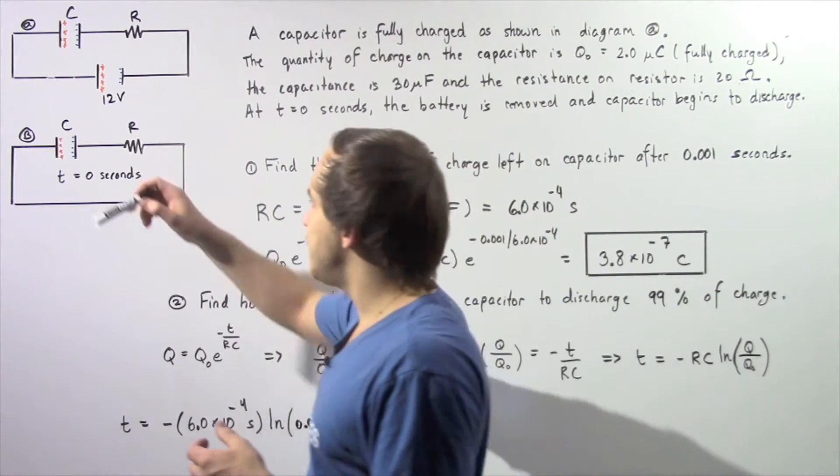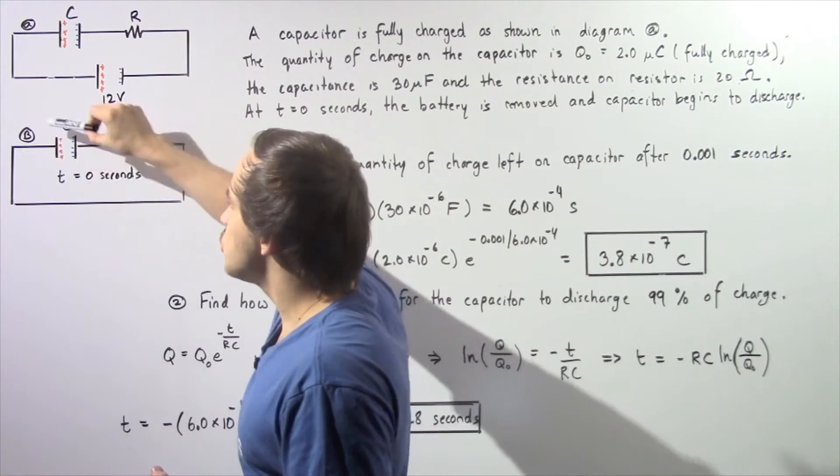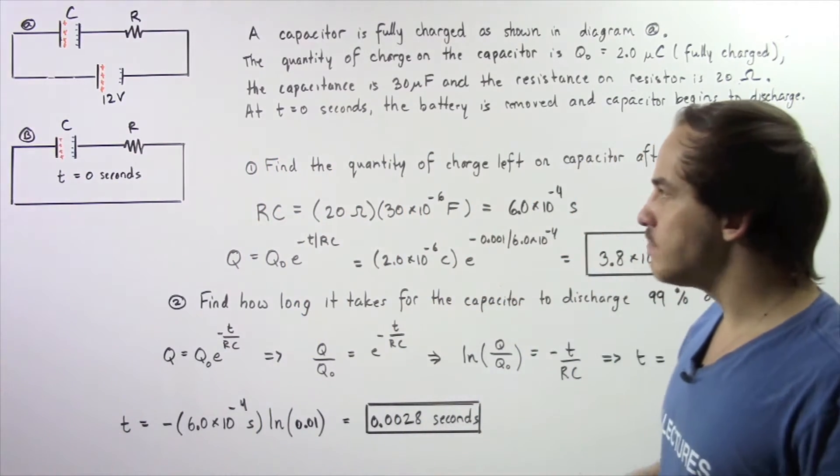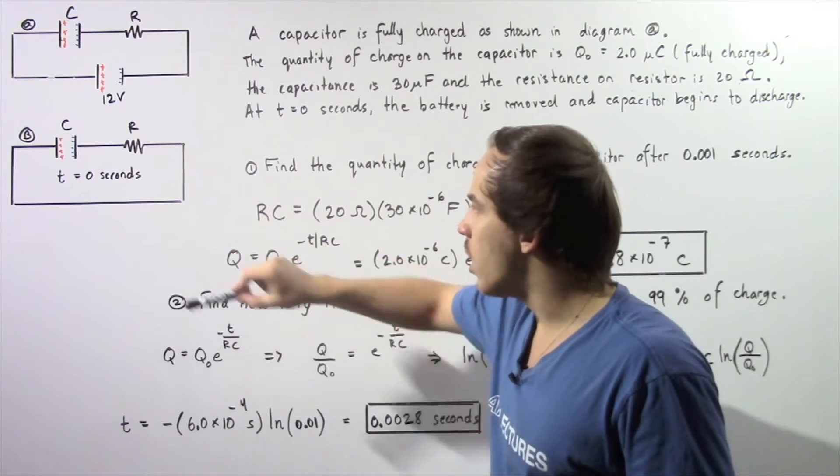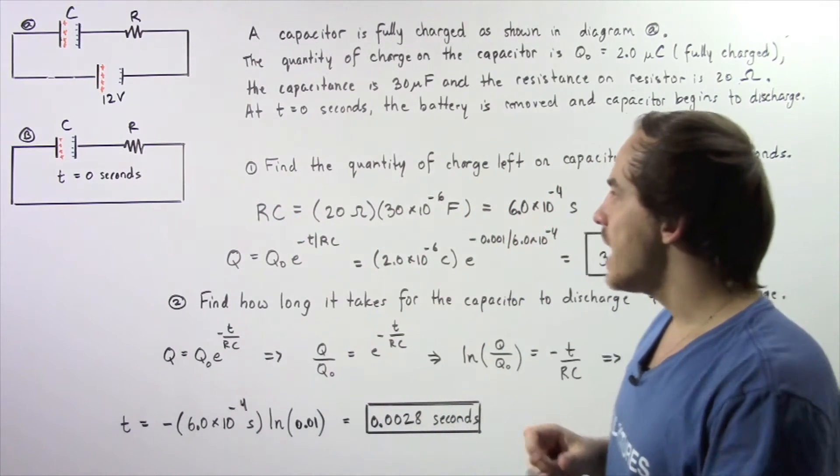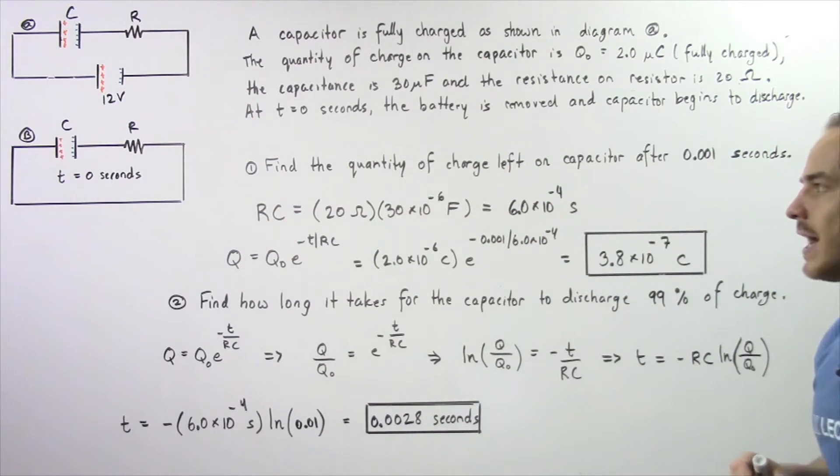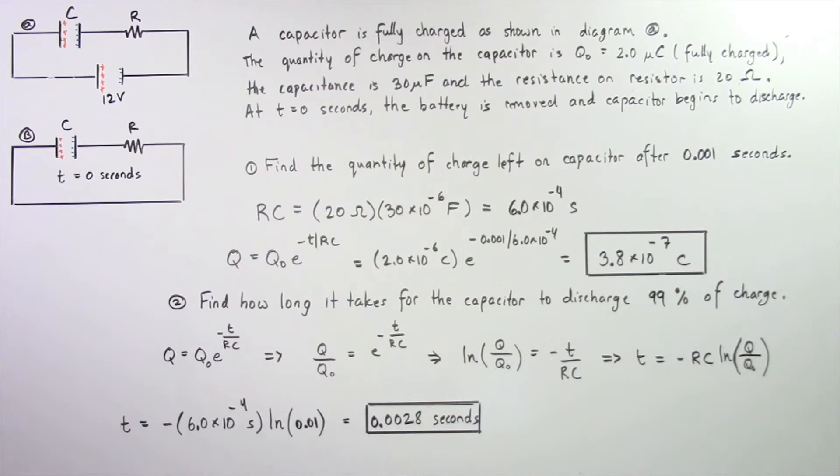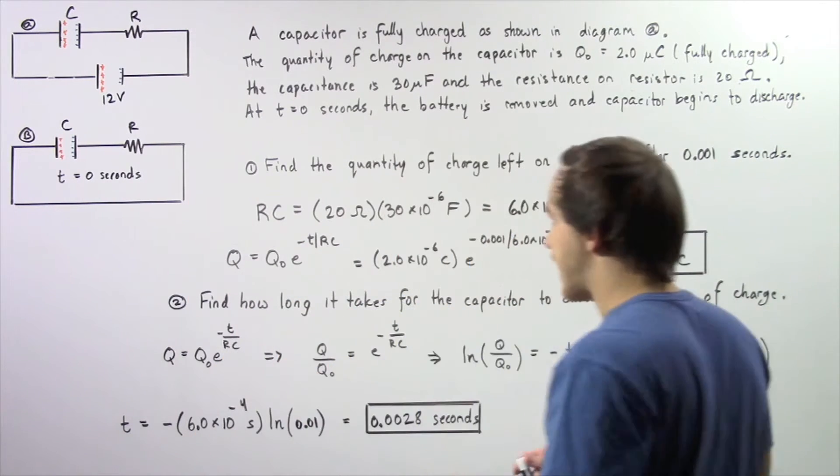Electrons begin to flow from our negative end to our positive end of our capacitor. At that moment, let's calculate parts 1 and 2. In part 1, we want to find the quantity of electric charge that is left on our capacitor after 0.001 seconds.